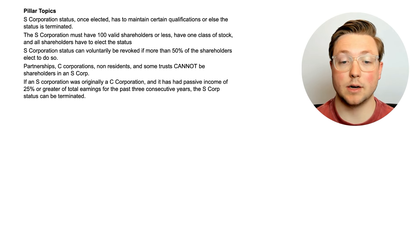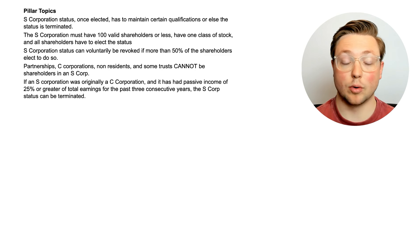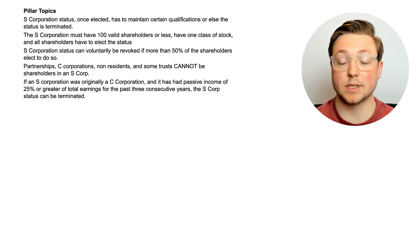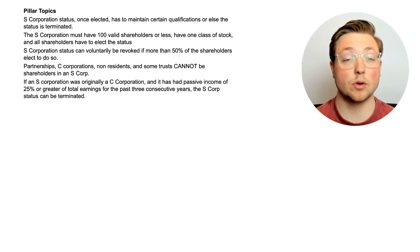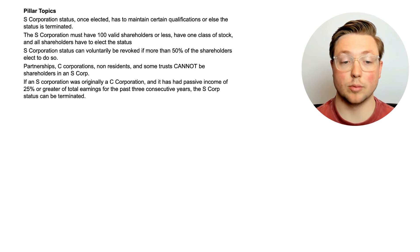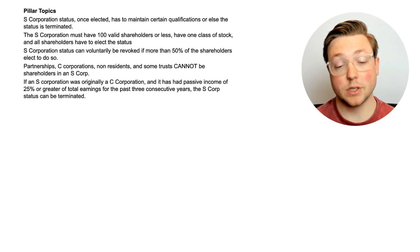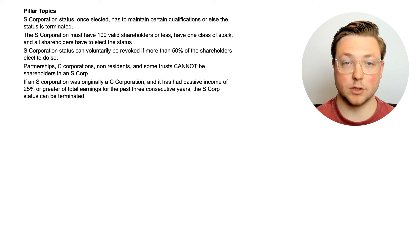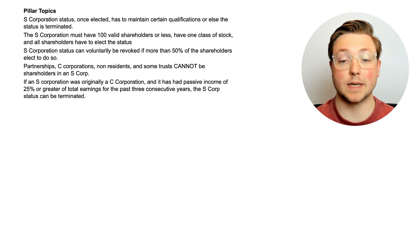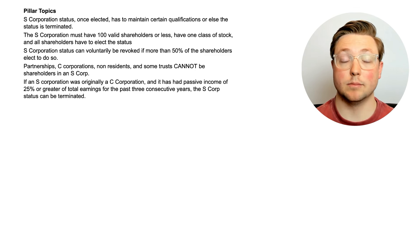S-corporation status can voluntarily be revoked if more than 50% of the shareholders elect to do so. Partnerships, C-corporations, non-residents, and some trusts cannot be shareholders in an S-corporation — if you ever see a C-corporation, partnership, or anything like that, that cannot be a shareholder. If an S-corporation was originally a C-corporation and then switched to an S-corporation, and it has passive income of 25% or greater of total earnings for the past three consecutive years, the S-corporation status can be terminated. Those are the basic things you need to know for the CPA exam about this topic.